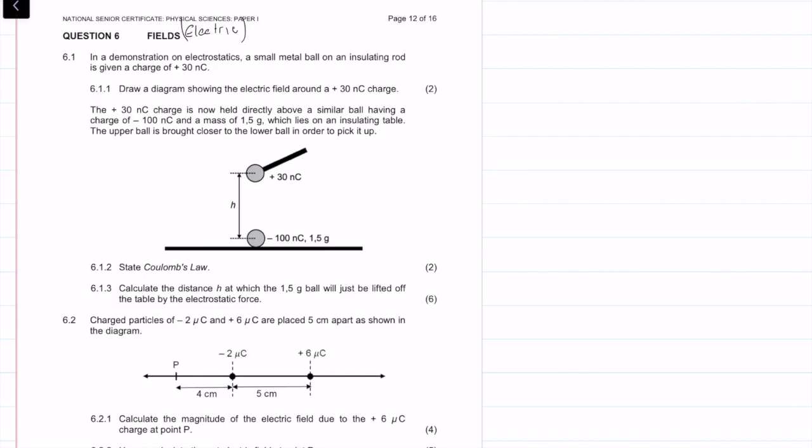Let's get straight into the question. In a demonstration on electrostatics, a small metal ball on an insulating rod is given a charge of 30 nanocoulombs. Draw a diagram showing the electric field around it.